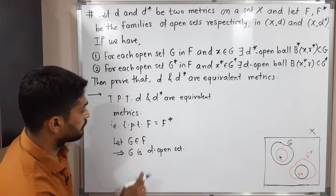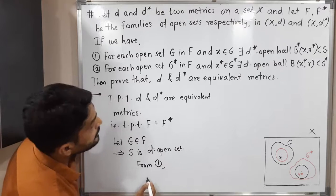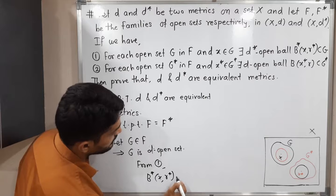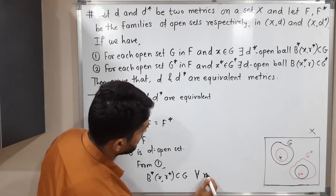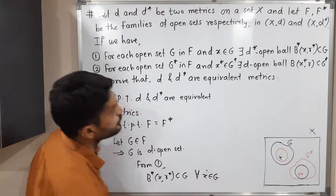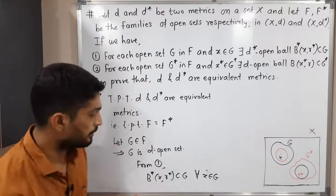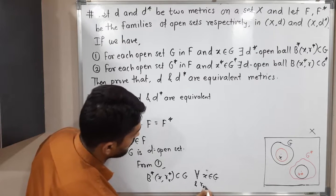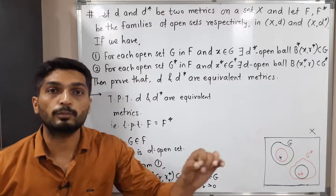From condition one, we get: B*(x, R_x) ⊆ G, and this is true for every x belonging to G, where R_x > 0. The radius depends on that point x, which is why I write R_x.